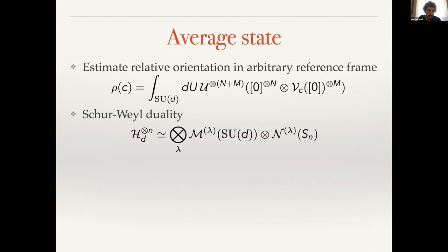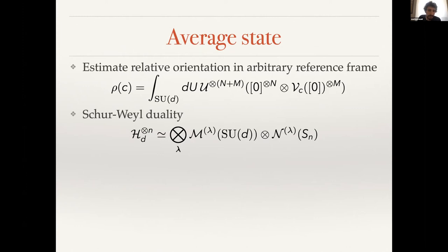As a reference, you can take state zero and a unitary V_c parameterized by the overlap c. The main element to simplify this state is Schur-Weyl duality: the Hilbert space of n copies of a d-dimensional system can be represented as a tensor product of irreducible representations labeled by lambda, which are representations of both the unitary group in dimension d and the permutation group of n elements. Each group acts non-trivially only on one part of the subsystem for each value of lambda.